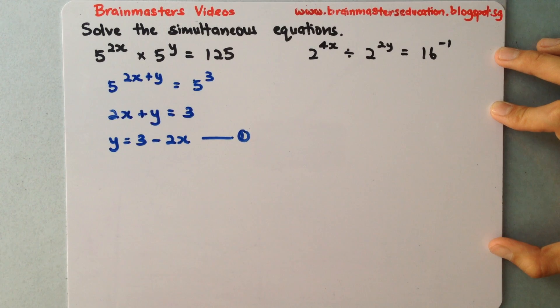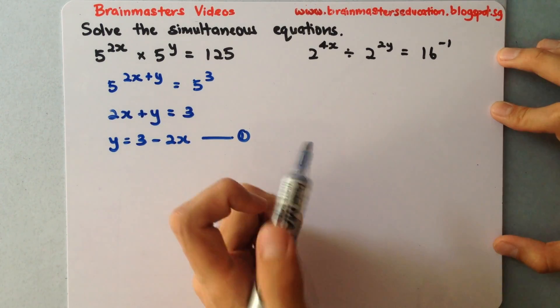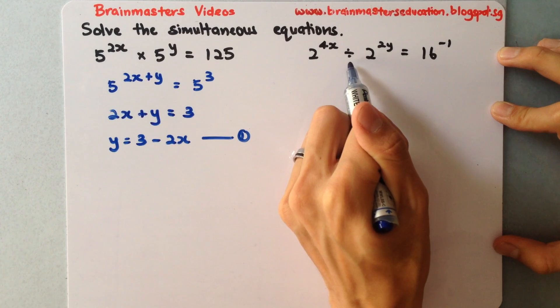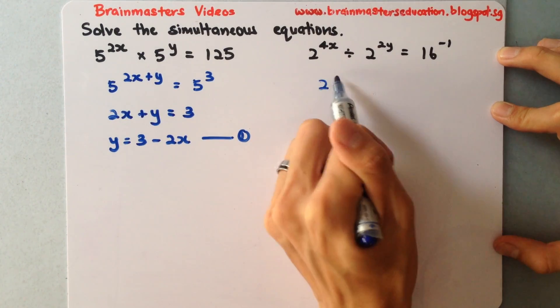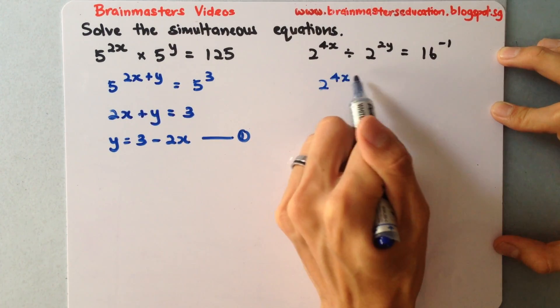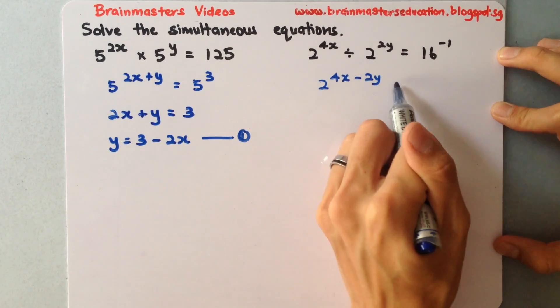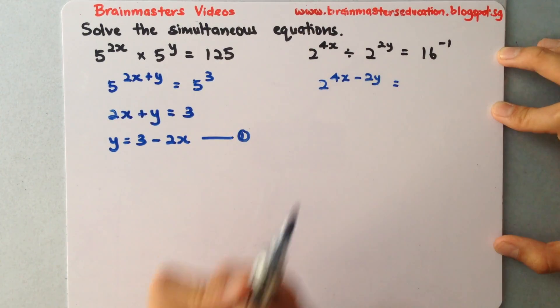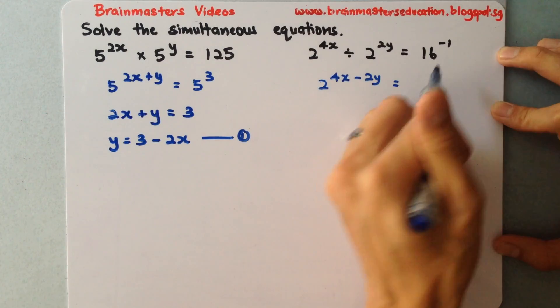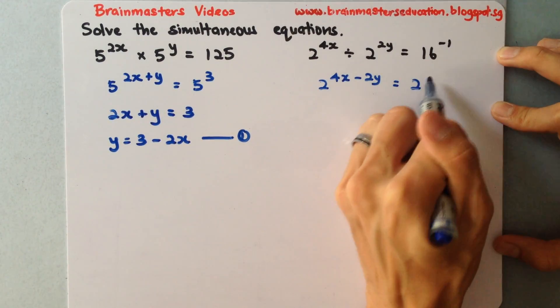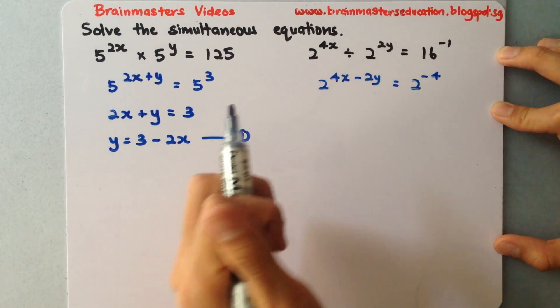Now the next thing is, I will use my second equation given, which is here. It's a negative because it's division. So 2 to the power of 4x minus 2y. 16 is actually 2 to the power of 4, and multiply by the negative 1 is 2 to the power of negative 4.